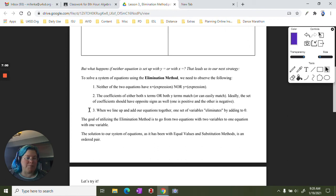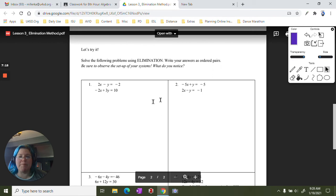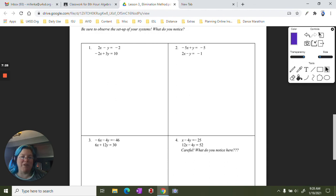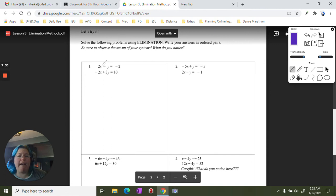And again, the goal of this method is the same as that of substitution and equal values. Go from two equations with two variables to one equation with one variable. So let's see how this works. So I've got two examples here we can do together, and then one that we can, that you can try on your own, and then one that we can explore a little bit further.